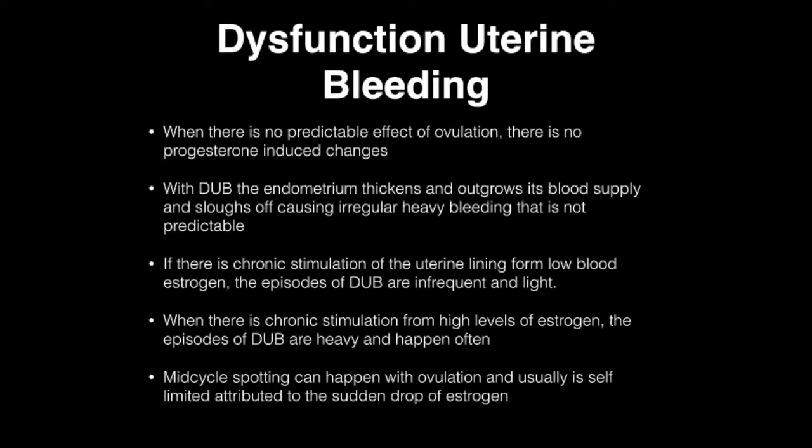If there is chronic stimulation of the uterine lining from low blood estrogen levels, the episodes of dysfunctional uterine bleeding are infrequent and light. Whereas when there is chronic stimulation at high estrogen levels, the episodes are heavy and often. Mid-cycle spotting can happen with ovulation and is usually self-limited, attributed to a sudden drop of estrogen.